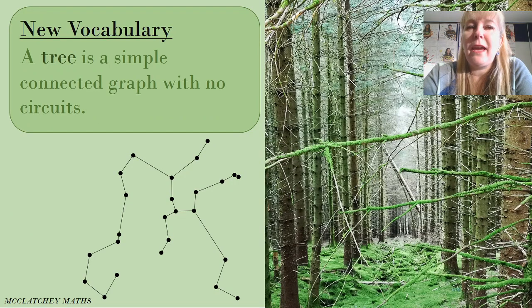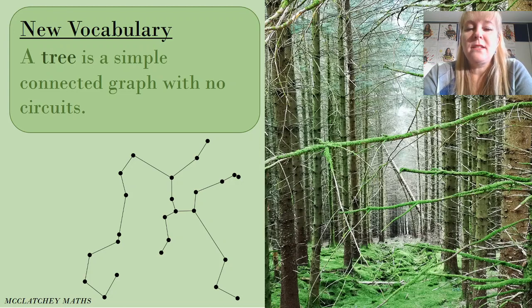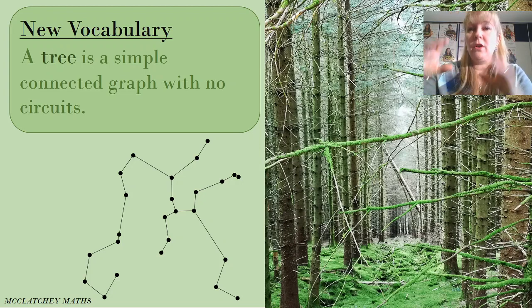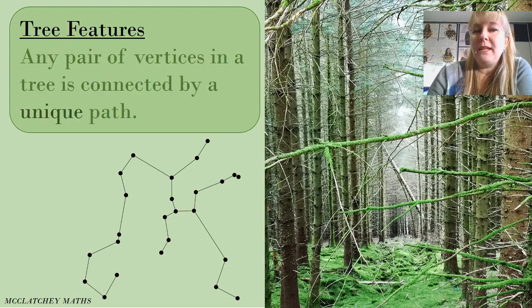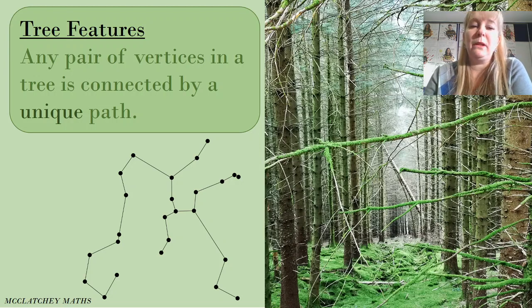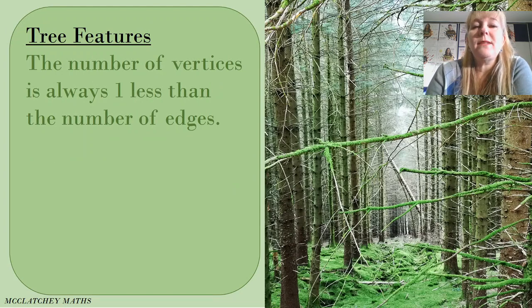We're going to engage in a little bit of new vocabulary. We're looking at a tree in networks — it's a simple connected graph that has no circuits. That means we don't have any situations where we have a circuit inside the network. Any pair of vertices in a tree is connected by a unique path, so there are no parallel edges and no loops. The number of edges is always one less than the number of vertices.